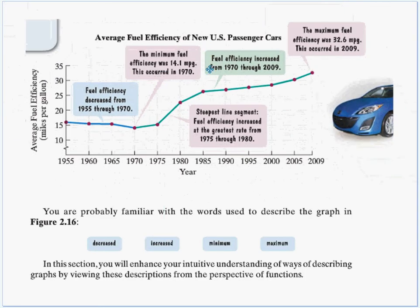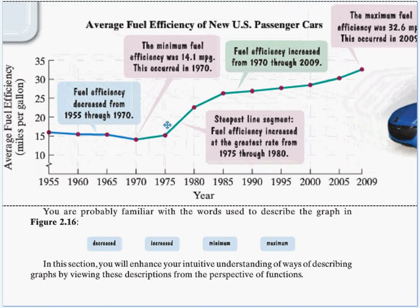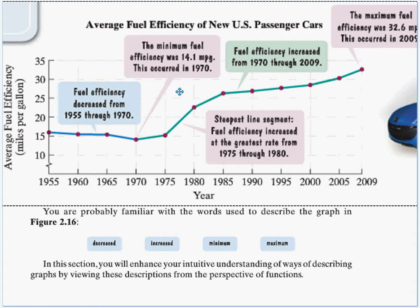The book starts with a graph titled Average Fuel Efficiency for U.S. Passenger Cars, going from the 1950s to 2009. The y-axis shows average fuel efficiency in miles per gallon. We hovered around 15, got a little worse up to the 70s, then fuel efficiency greatly increased from 1975 to 1980 into the low 20s. The minimum — 14.1 miles per gallon — occurred in 1970, during the oil embargo when people waited in line for gas, prompting the industry to develop more fuel-efficient cars.